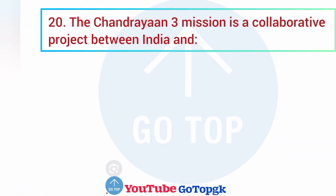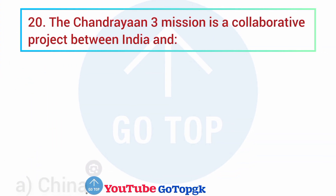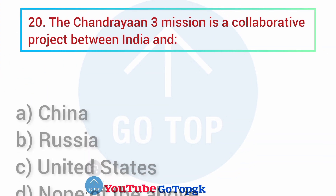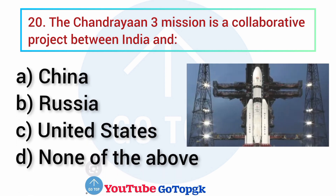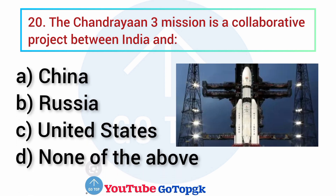Question No. 20. The Chandrayaan-3 mission is a collaborative project between India and: Options: A. China, B. Russia, C. United States, D. None of the above. Your correct answer is option D: None of the above.